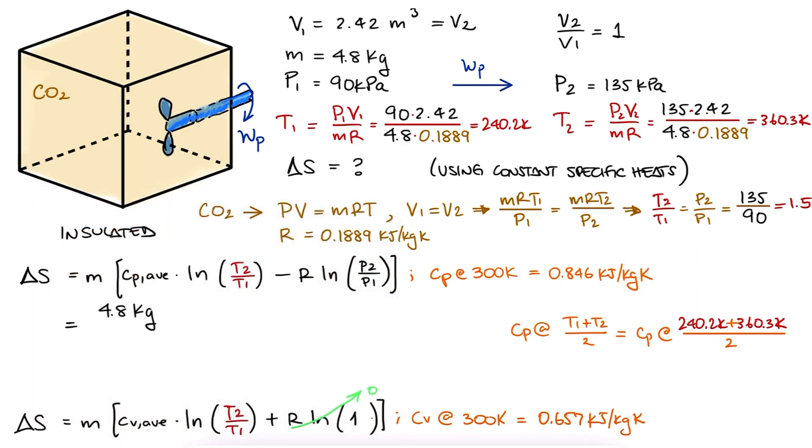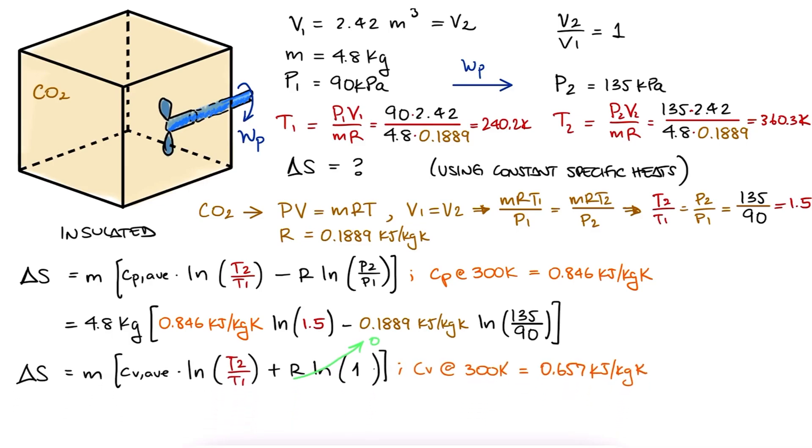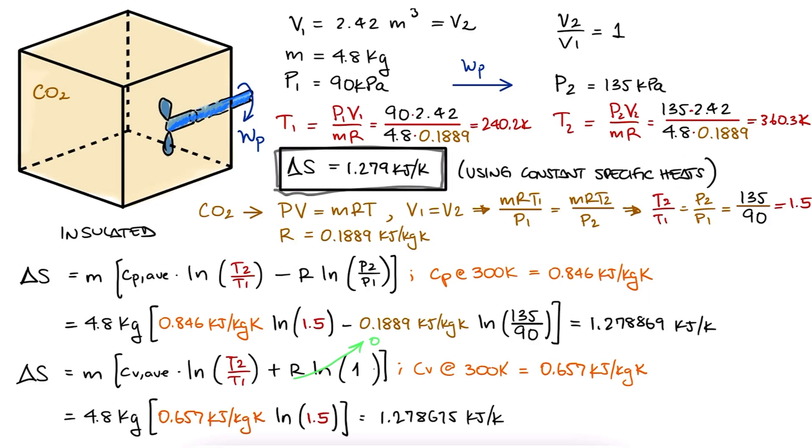We substitute the mass, CP, temperature ratio, the gas constant for CO2, and the pressure values in the first expression, and we substitute mass, CV, and temperature ratio in the second expression. And we get the same 1.279 kilojoules per Kelvin value for both. And that's the total change in entropy.